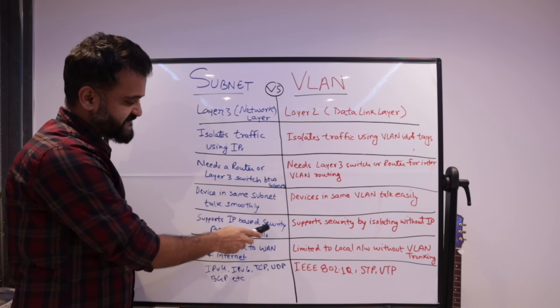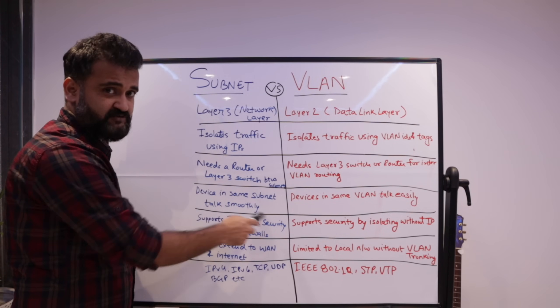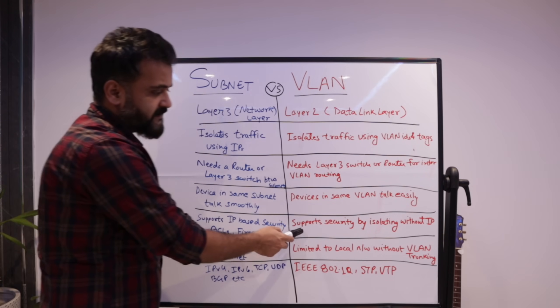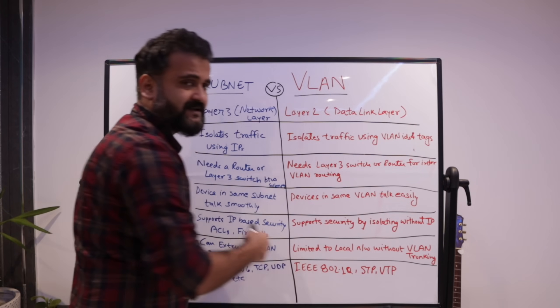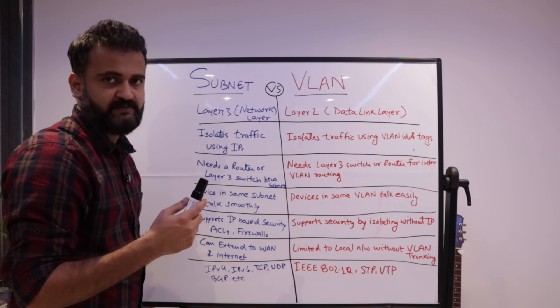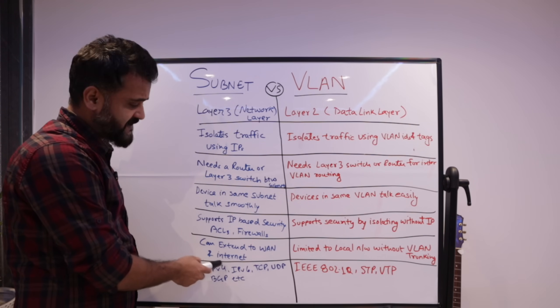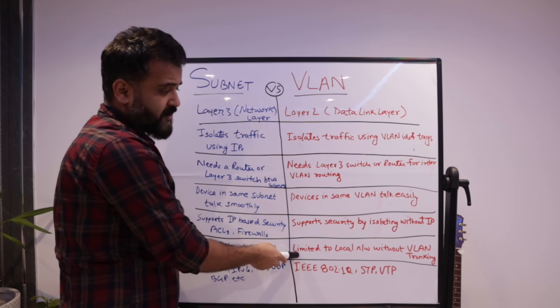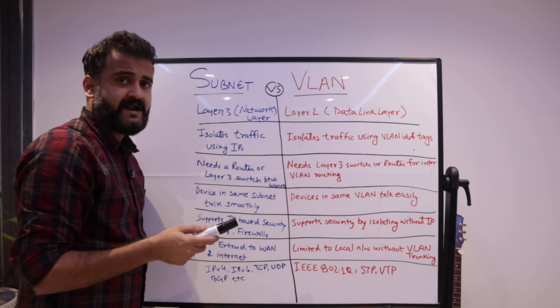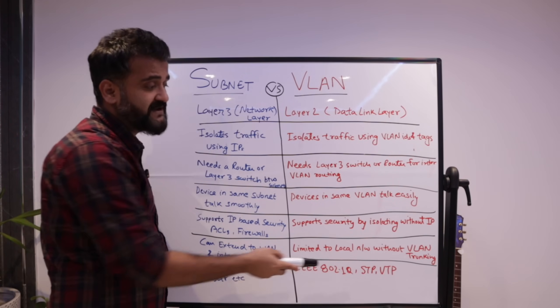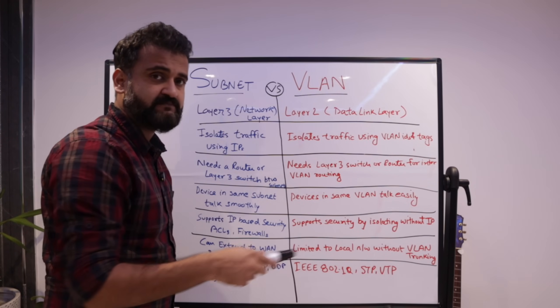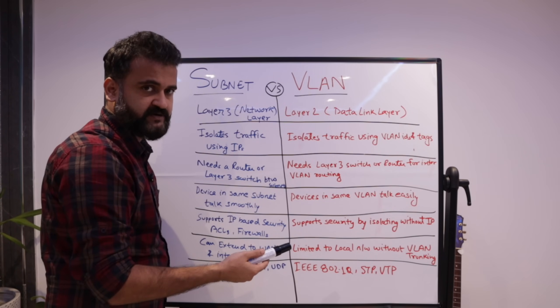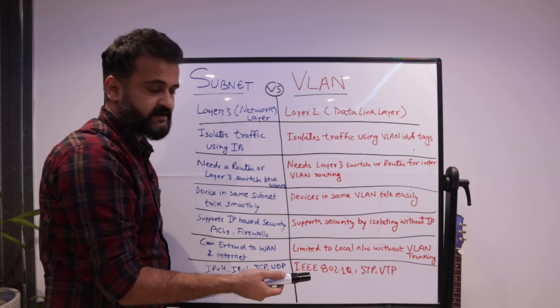It supports IP based security, access control levels and firewalls. So this comes naturally with layer three because we are using IP address. Whereas here, the security is primarily provided by isolating the network without using IP addresses. It can be extended easily to wide area network and internet because you are potentially using the router. Here, you are only limited to your local network unless you use VLAN trunking, which we talked about, where you actually connect the router and enable the inter-VLAN communication. And that can be extended to the internet as well.